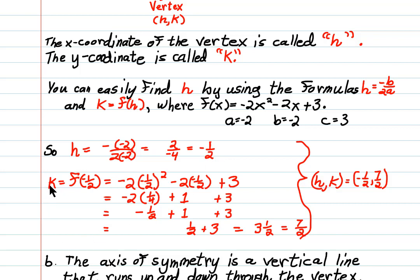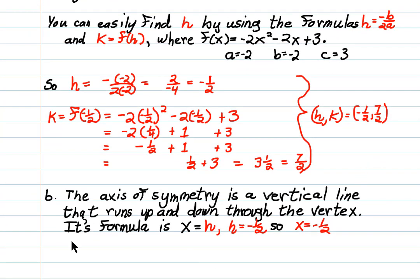Now k is going to equal f of negative 1 half. So I put negative 1 half in for every x and then I calculate and find out that k is going to be 3 and a half, which can also be written as 7 over 2. MyMathLab is asking for fractions. So our vertex is going to be negative 1 half comma 7 halves.